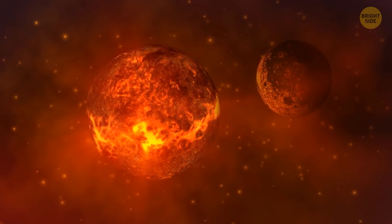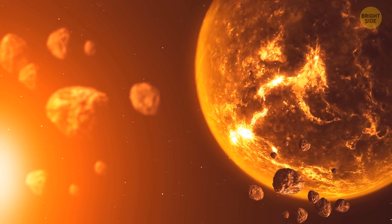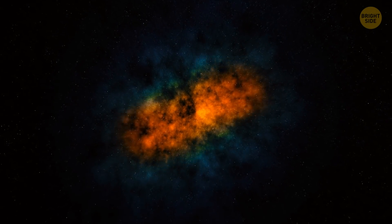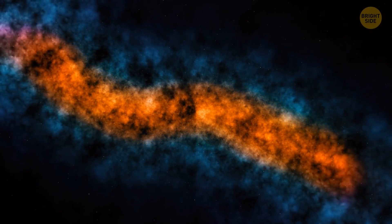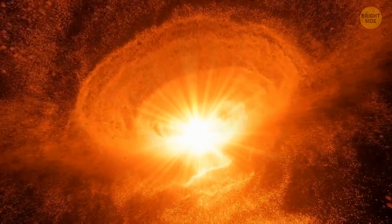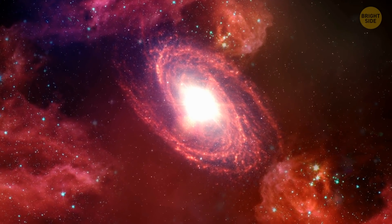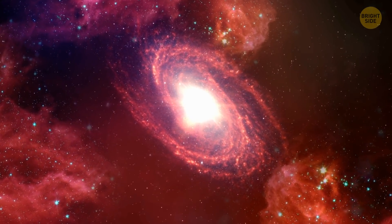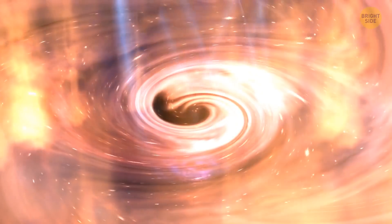Many experts agree the Universe might come to its end about 3 to 22 billion years from now. It's expanding all the time, which means it formed from a compact state. If it has a beginning, it's probably going to have an end as well. One of the popular theories says the growth will slow down, and gravity will become the powerful force that will make the Universe shrink. That will lead to complete chaos.